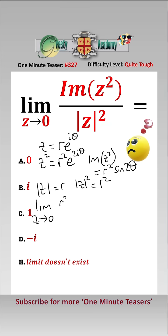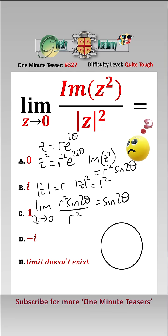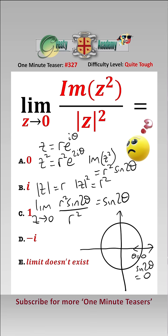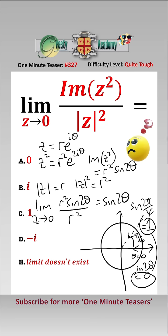So our limit becomes the limit as z approaches 0 of r squared sine 2 theta over r squared, which equals sine of 2 theta. For the limit to exist, no matter how we approach the origin, the limit must approach the same value. If we approach from theta equals 0, then sine 2 theta equals 0, so our limit would be 0. But if we approach from an angle of pi over 4, then our limit is sine of 2 pi over 4, which is equal to 1. Clearly the limit does not approach the same value from different angles, and therefore the limit doesn't exist.